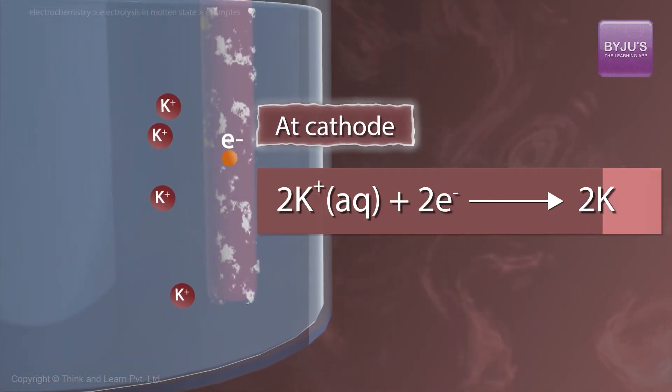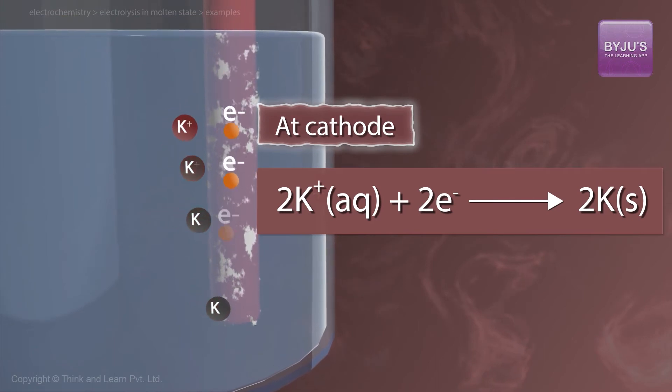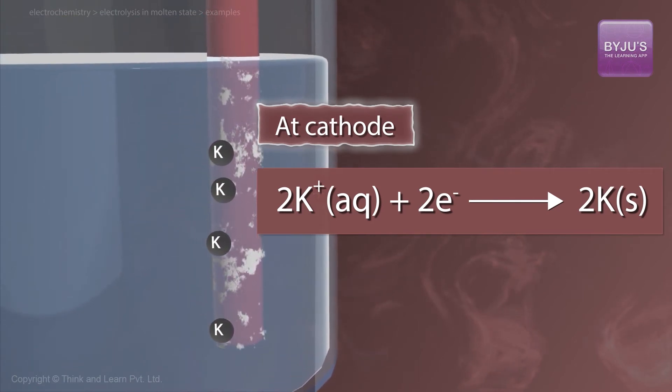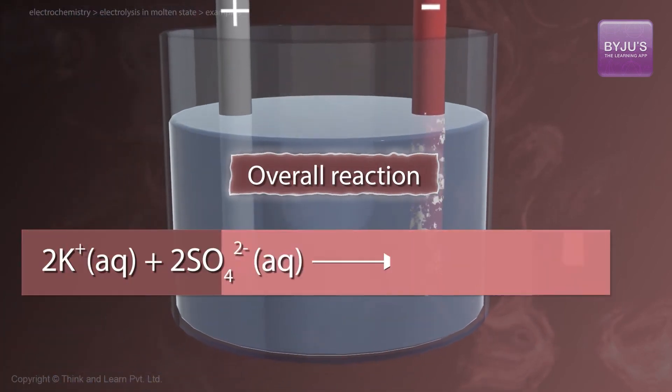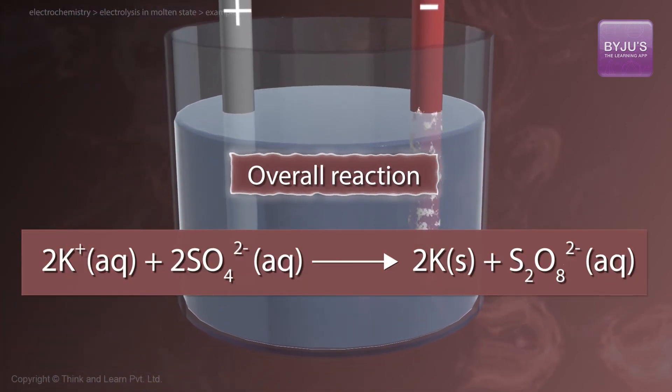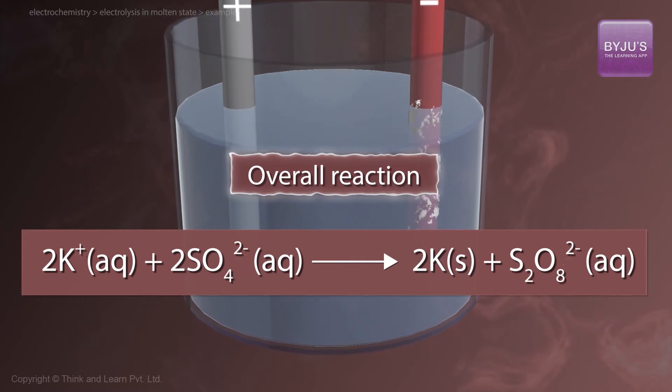At the cathode, 2K+ plus 2 electrons get converted into 2K, meaning potassium ions are getting reduced. Therefore, the overall reaction is 2K+ plus 2SO4 2- gives 2K plus S2O8 2-.